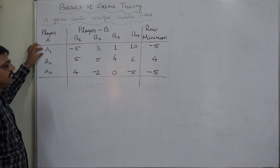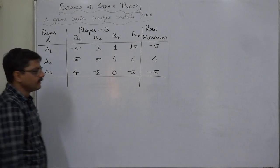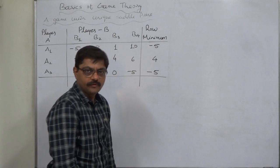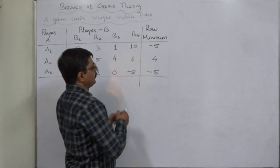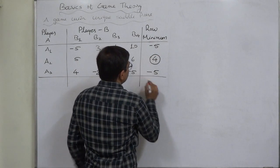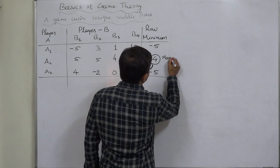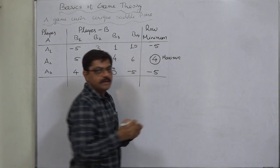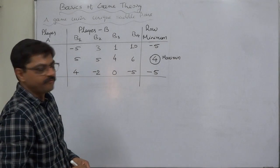These are the minimum payoffs if player A selects either strategy A1, A2, or A3. Now, out of these selected minimum values of each row, select the maximum. This is known as maximin — the maximum of minimums. Cover this number with a circular node.